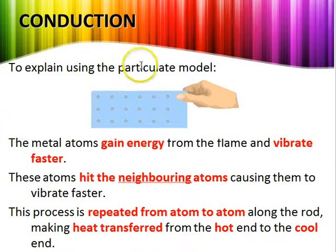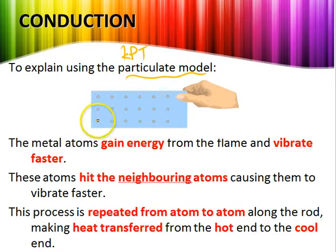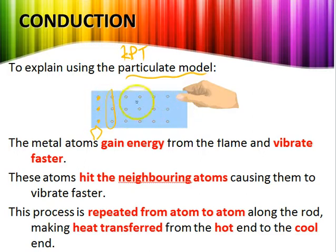We explain conduction using the particulate model — the Kinetic Particle Theory, or KPT. The metal atoms gain energy from the flame and vibrate faster. These atoms then heat the neighbouring atoms, causing them to vibrate faster as well. This process is repeated from atom to atom along the rod, transferring heat from the hot end to the cooler end.